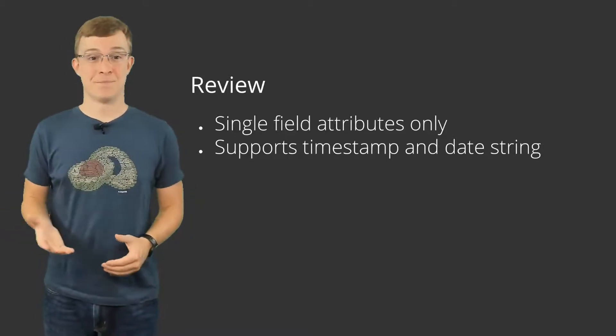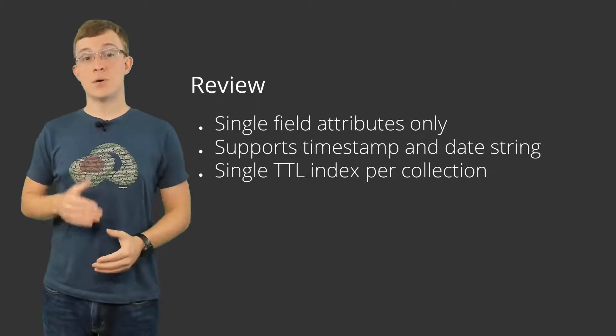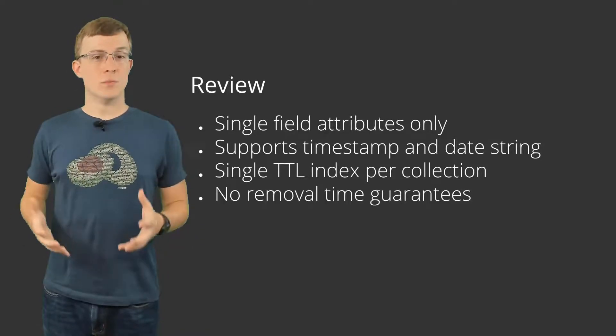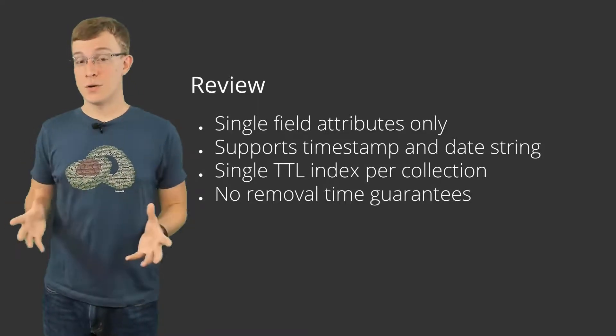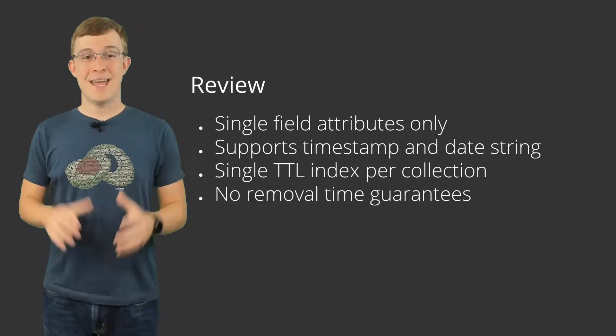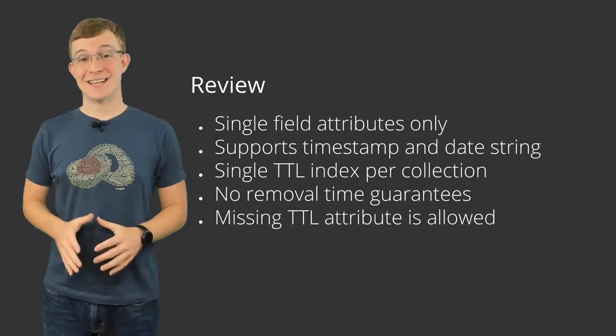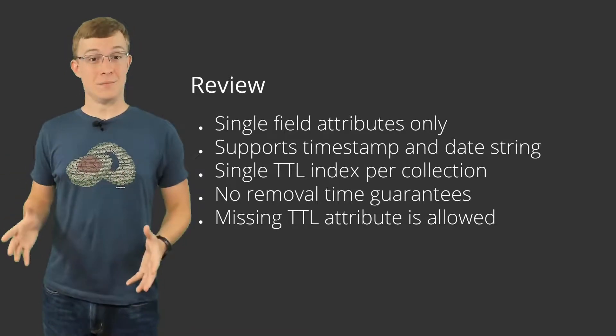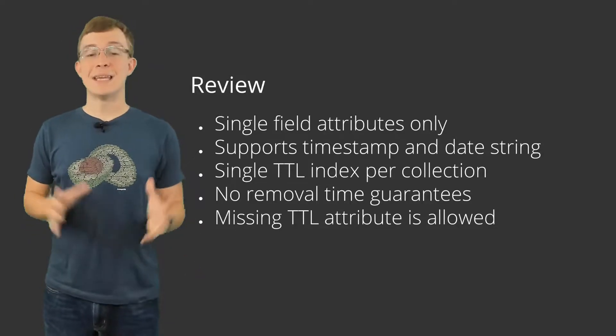In this video, we took a look at how to create a time-to-live index and how to create documents that take advantage of it. Time-to-live indexes are a built-in, simple, and convenient solution for managing documents that need eventual removal. Some key points to remember: TTL indexes support single-field attributes only. The TTL attribute must be a timestamp in seconds or a date string. You may only have one TTL index per collection. There is no time of removal guarantee — it is dependent on when the removal operation occurs and should not be relied on for consistency. If the attribute specified in the TTL index is not in the document, the document will never be deleted. This allows for having documents that will and will not be deleted in the same collection.